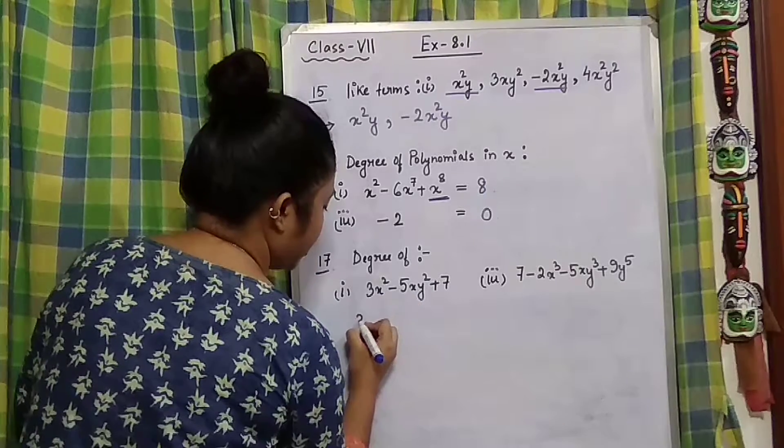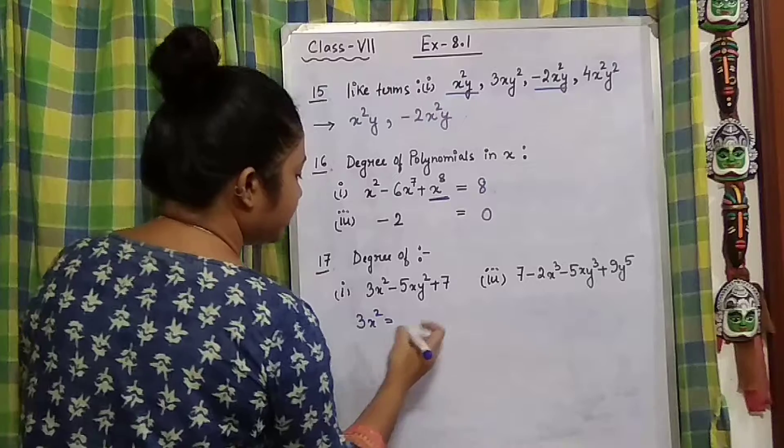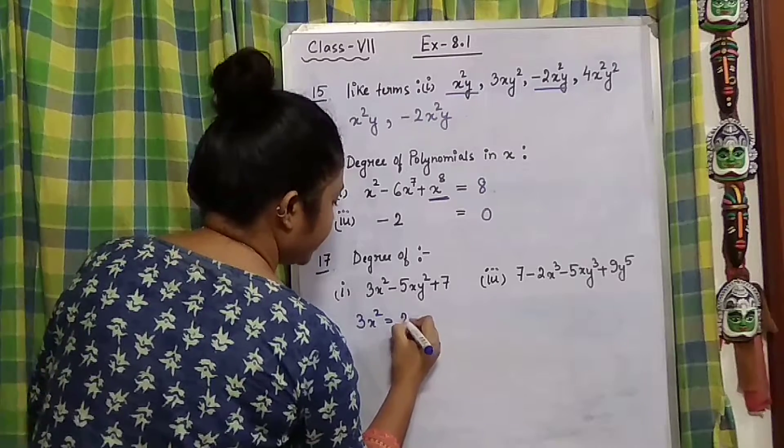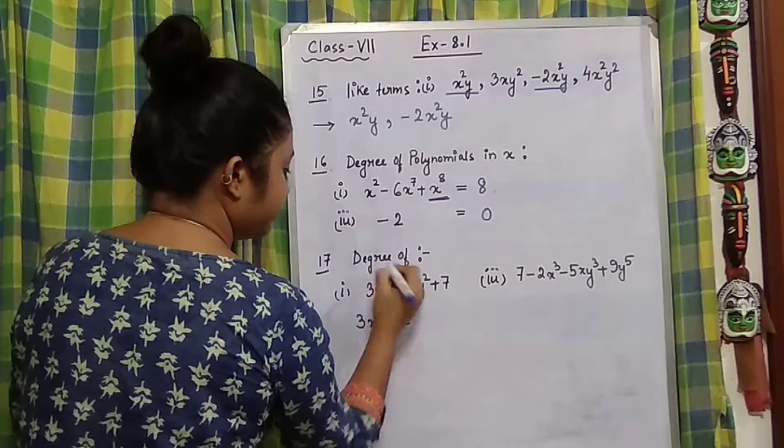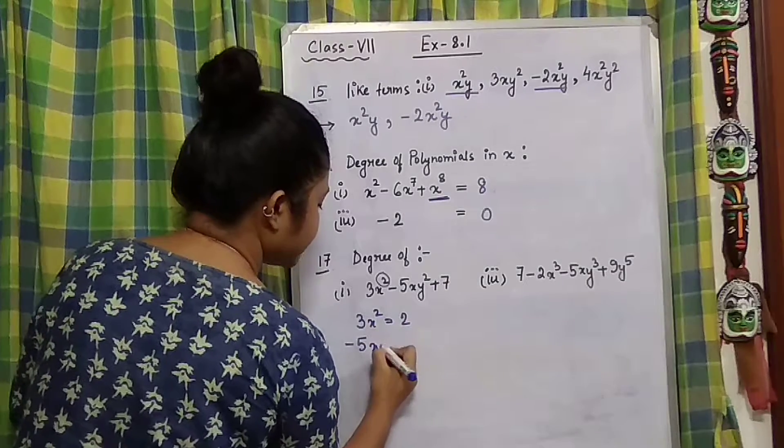3x². In 3x², what is the degree of the polynomial? That is 2, right? Now coming to the next one, -5xy². For this,